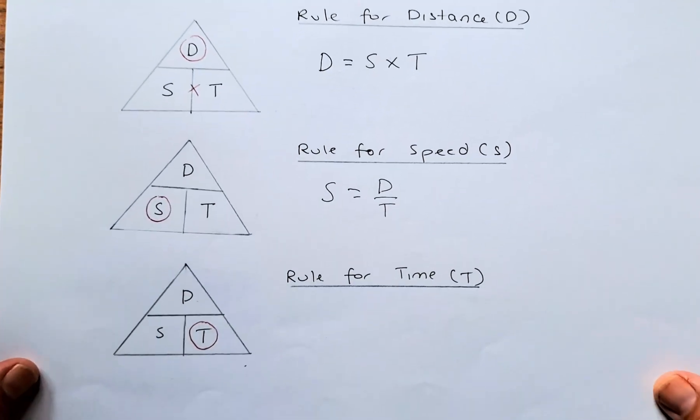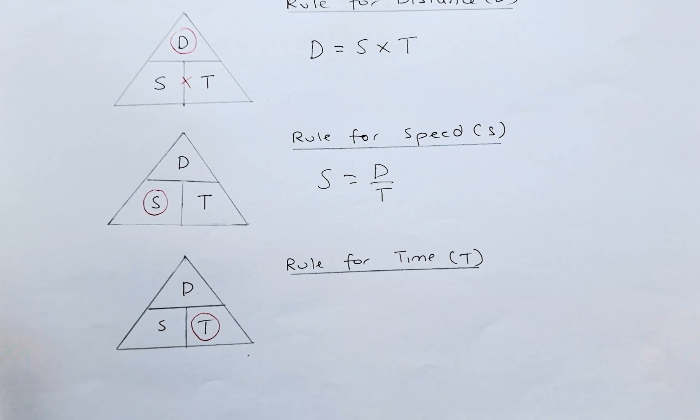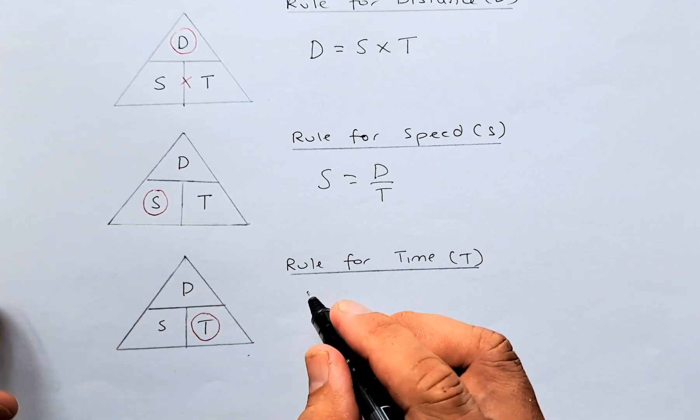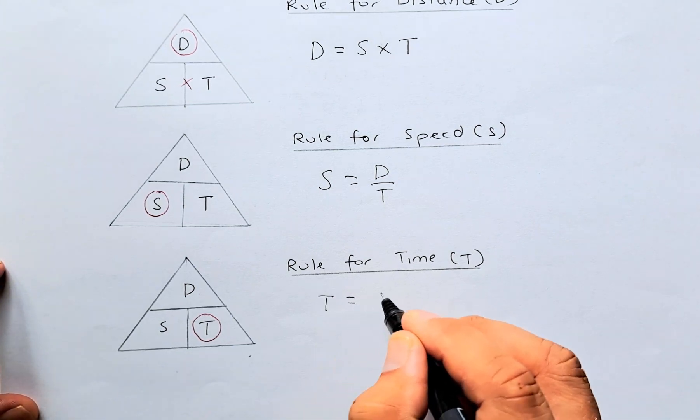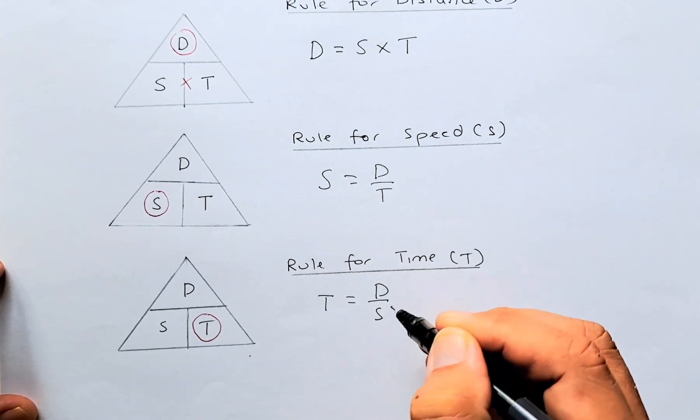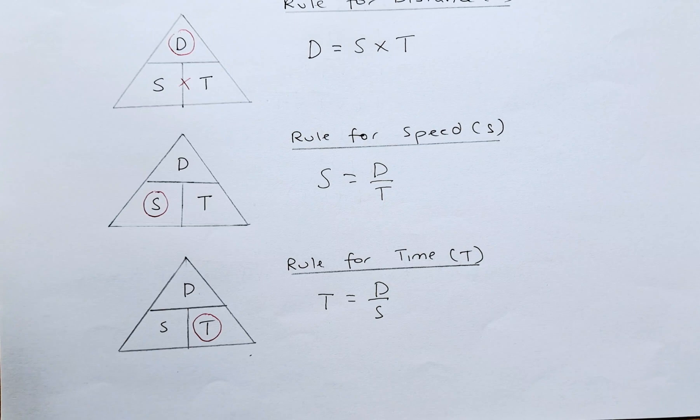And last but not least, we are going to find the rule for time. We'll circle the T and again D is on top of S, so the rule for time is going to be T equals to D divided by S or time equals to distance divided by speed.